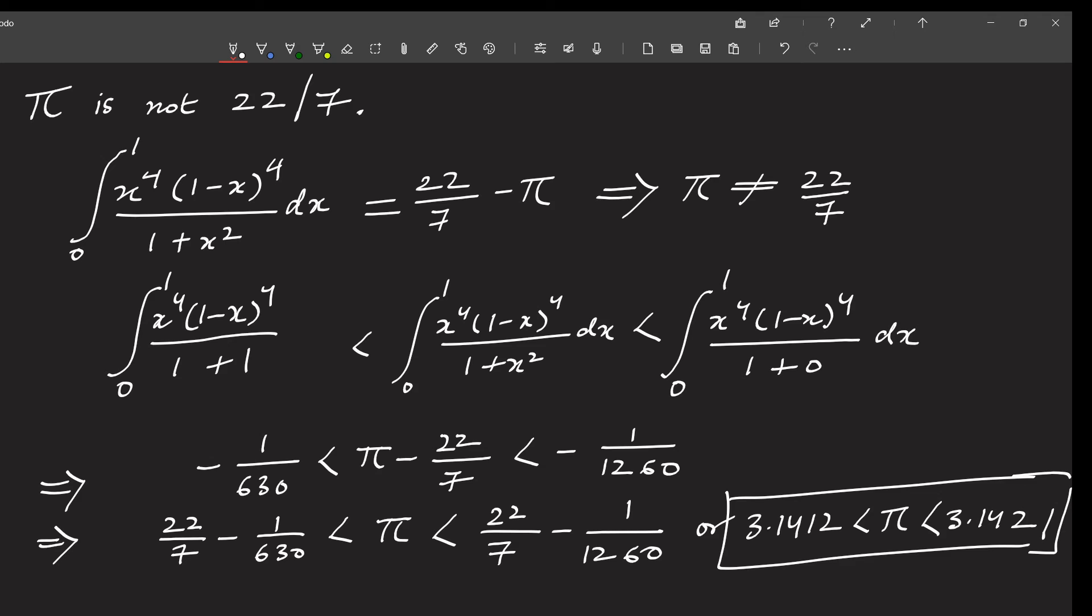So in conclusion, the value of pi is not 22 by 7. 22 by 7 is only an approximation for the value of pi. Pi is an irrational number, and it can never be expressed in the form p by q, where p and q are natural numbers. I hope that with this video, we have settled this argument once and for all.